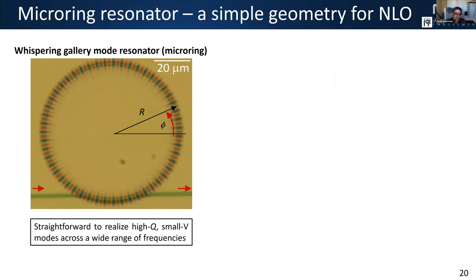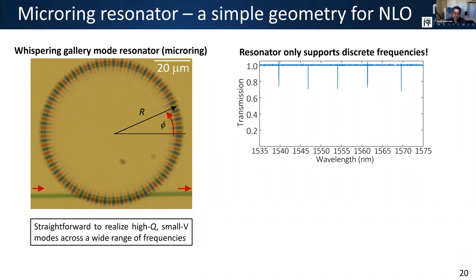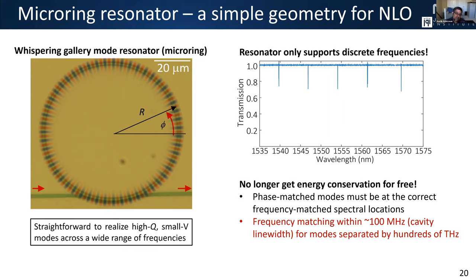When you work with a resonator, you no longer admit a continuous band of frequencies — you now support discrete resonances. Earlier I said energy conservation is straightforward in bulk or in waveguides, but in resonators we have to worry about whether phase-matched modes are also frequency matched. They need to have the right frequency relationship to simultaneously satisfy both criteria. With a cavity linewidth on the order of 100 MHz, we need frequency matching on that order even though modes may be separated by hundreds of terahertz — not a trivial challenge.